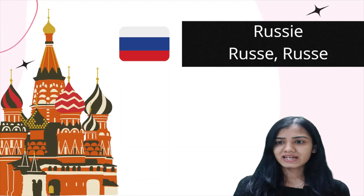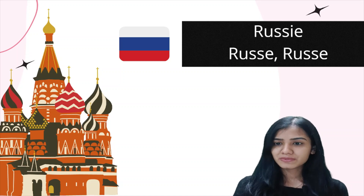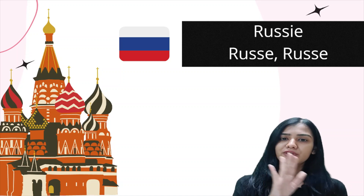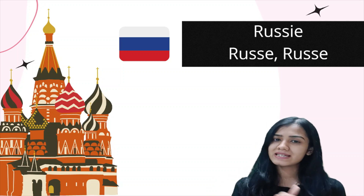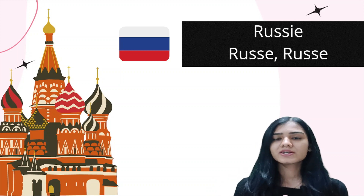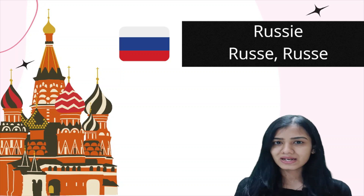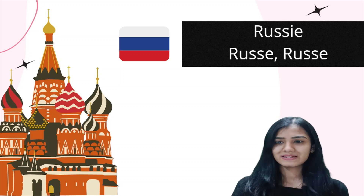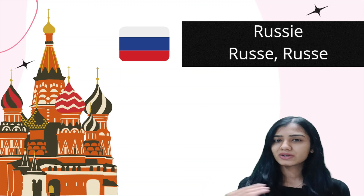For Russia, it's 'Russie'. And for a Russian person — for both a male person and a female person — the nationality is the same: it's 'Russe'. With the R sound, it's 'Russe'. So, 'Russie' and 'Russe'.